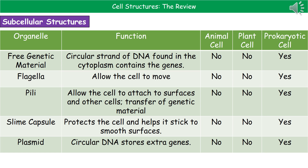The free genetic material is typically a circular strand of DNA found in the cytoplasm, which contains the genes required for all basic proteins to be made. This is only found in prokaryotic cells, because both plant and animal cells have a nucleus that contains their genetic material. The flagella allows the cell to move by spinning, propelling the cell through a fluid environment — again only found in prokaryotic cells.